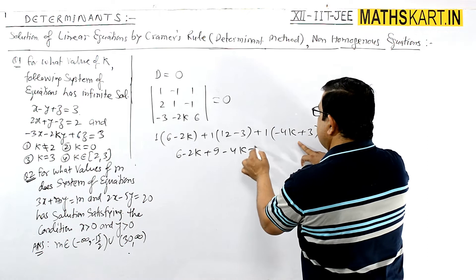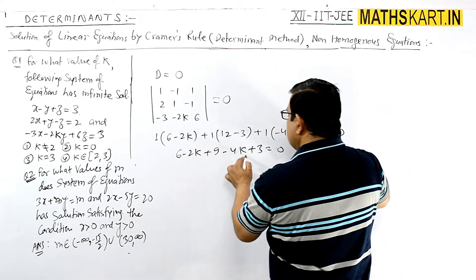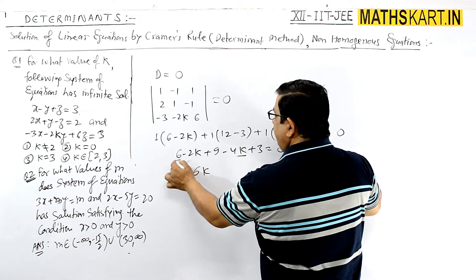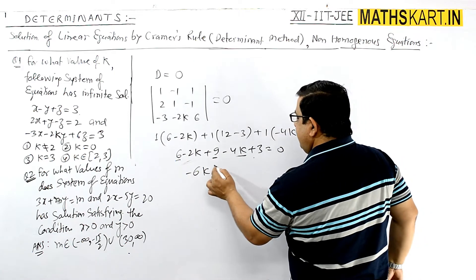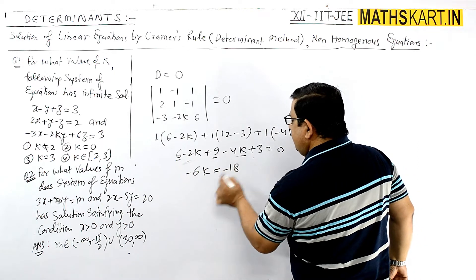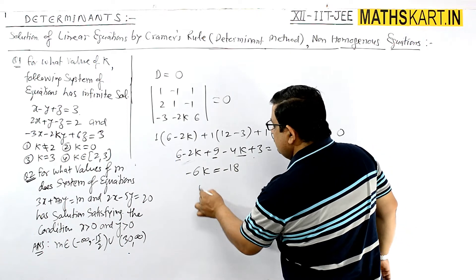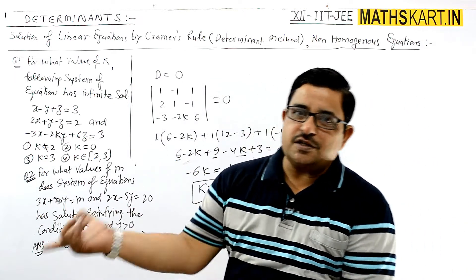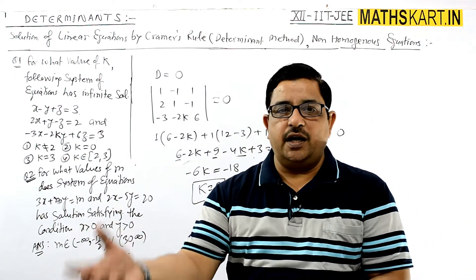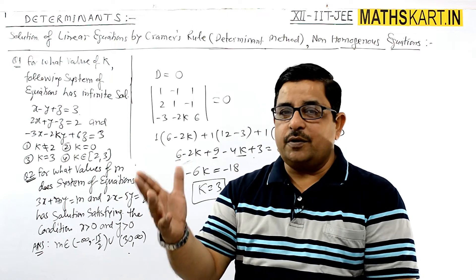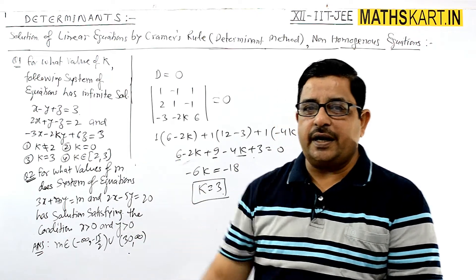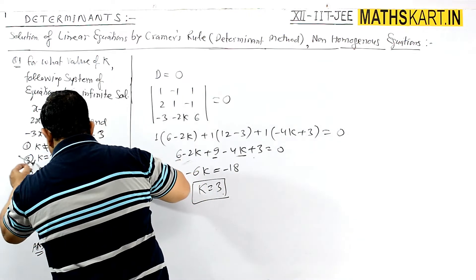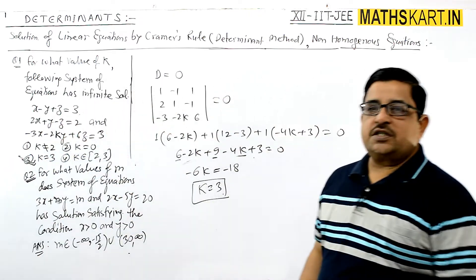Solving gives minus 6k plus 18 equals zero, therefore k equals 3. Getting this fixed value of k confirms it satisfies all conditions D = 0, D1 = 0, D2 = 0, D3 = 0 simultaneously. The third option is correct.